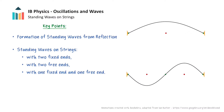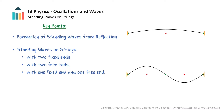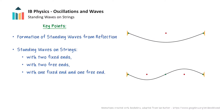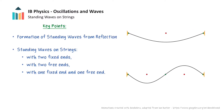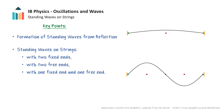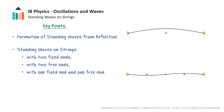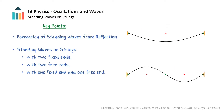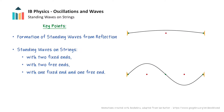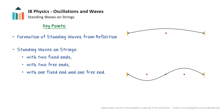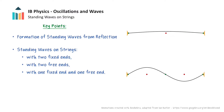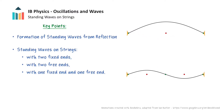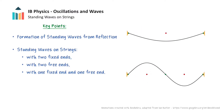This video will explore the formation of standing waves on strings. We will begin with a discussion on how standing waves can be formed when a wave is incident at a boundary. We can then examine the different standing waves that can exist on strings under different boundary conditions, such as strings with two fixed ends, two free ends, and one fixed end and one free end.